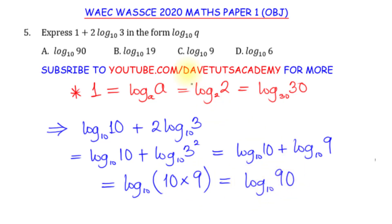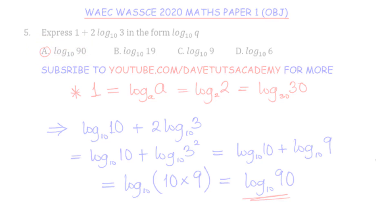This is now exactly in the form log to base 10 of Q that we were asked to find, where Q equals 90. Looking at the options, this is option A: log to base 10 of 90.